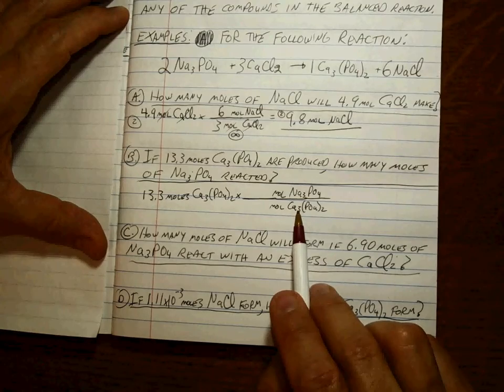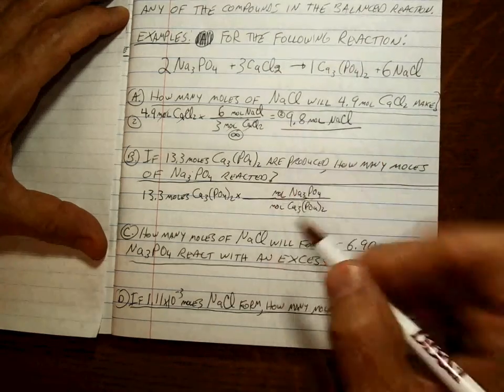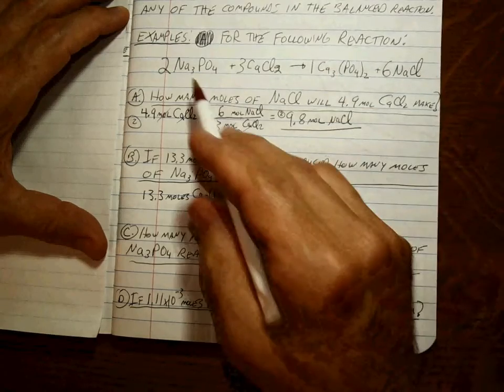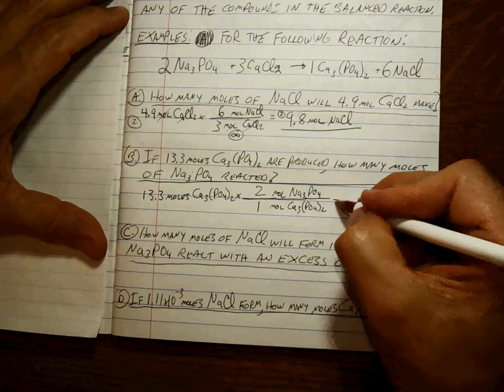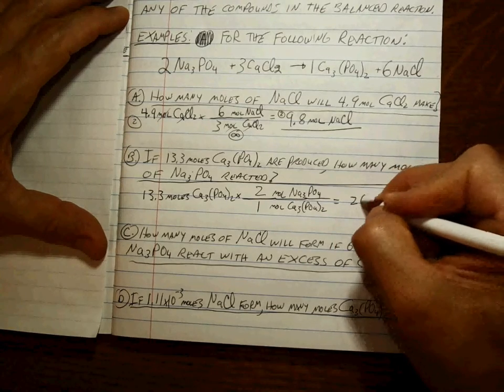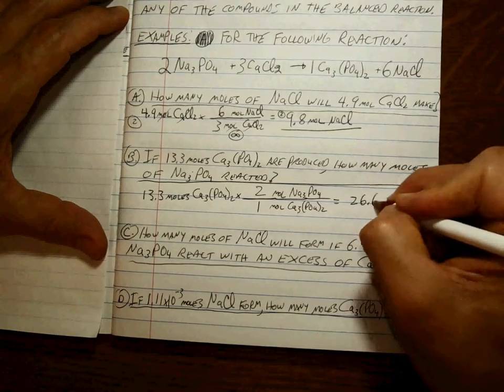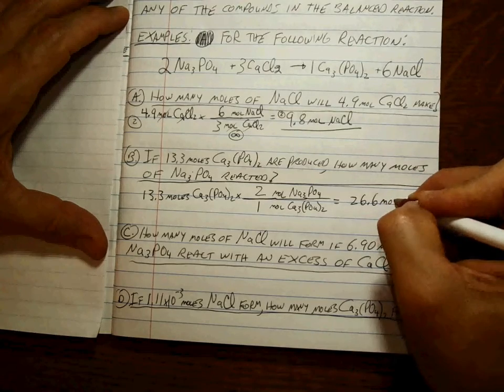The moles of what we want—sodium phosphate—go on the top. Is it a pain to write these out? Sure it is. I'm going to give you enough time to do it. And if you don't, it's real easy to mix up these two numbers. The one goes with the calcium phosphate, the two goes with the sodium phosphate. And even I can do this one without punching it into my calculator.